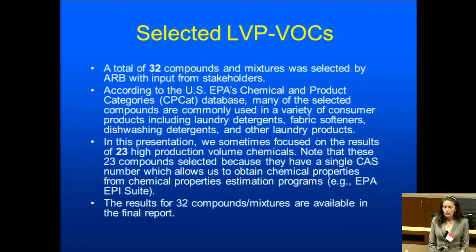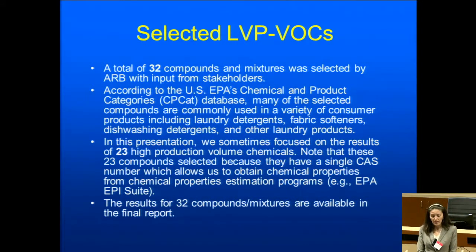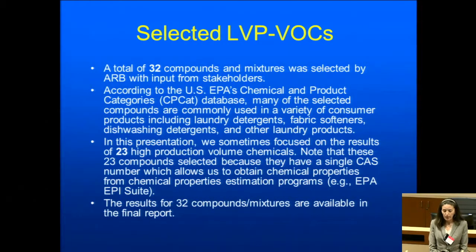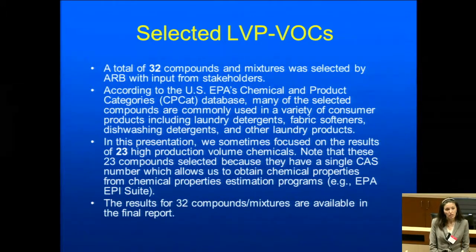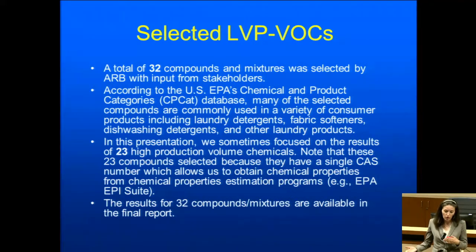We evaluated the fate and transport of a total of 32 compounds and mixtures selected by ARB with input from stakeholders. We also looked at the EPA chemical and product category database, CP-CAT, which has information on chemical use, and many of those selected compounds were found to be used in a variety of consumer products, including laundry detergents, fabric softeners, dishwashing detergents, and other laundry products. Sometimes we present results from all 32 compounds, and sometimes we focus on the 23 compounds that are high production volume compounds that are a single compound rather than a mixture. All results for all 32 compounds are included in the final report.